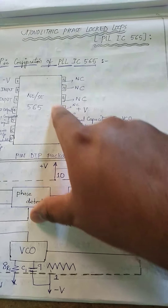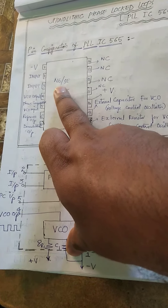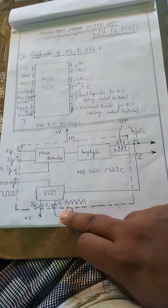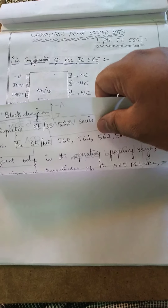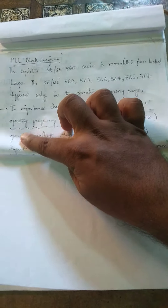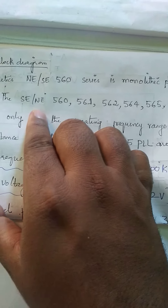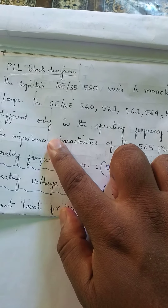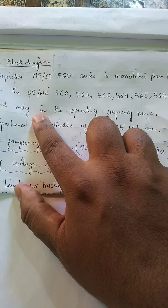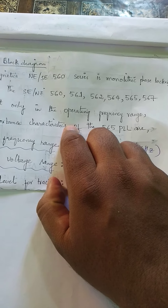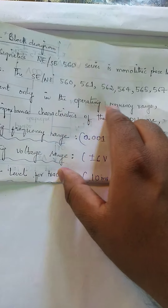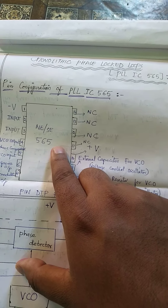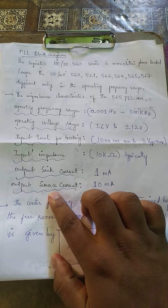Pin 6 is for reference output and pin 7 is for demodulated output. Since the VCO has modulation input, we need to recover the demodulated signal at the output — these are used in communication for modulating a message signal over a carrier. Pin 8 is for the external resistor for VCO, and pin 9 is for the external capacitor for VCO. Pins 11 through 14 are reserved and not used in the circuit.